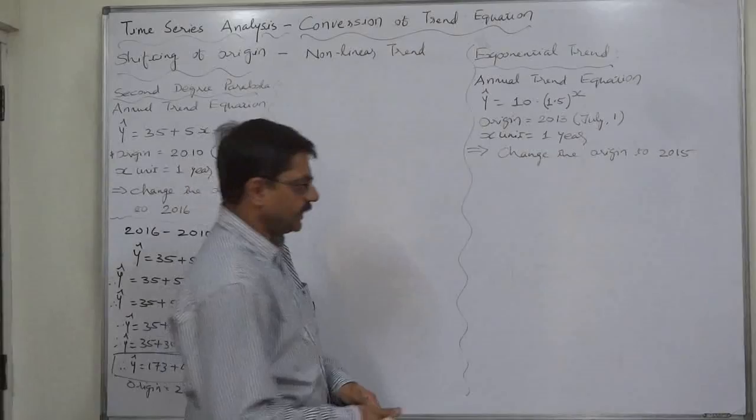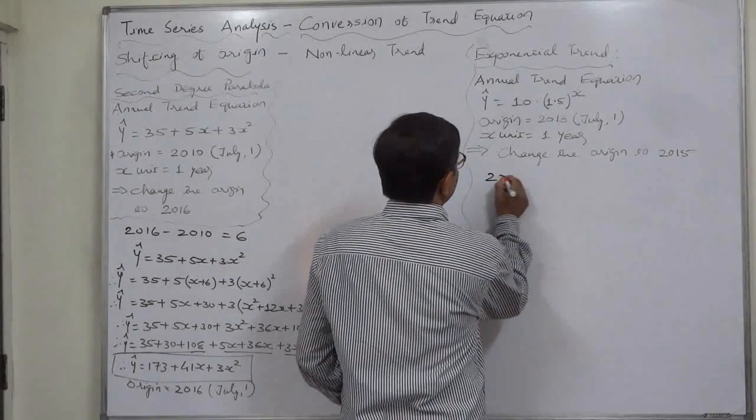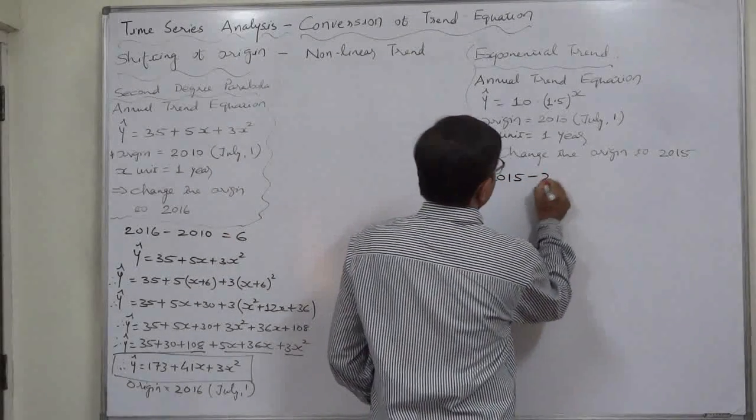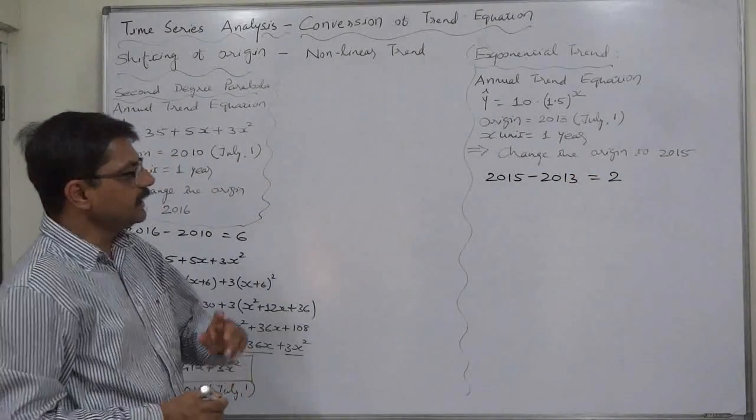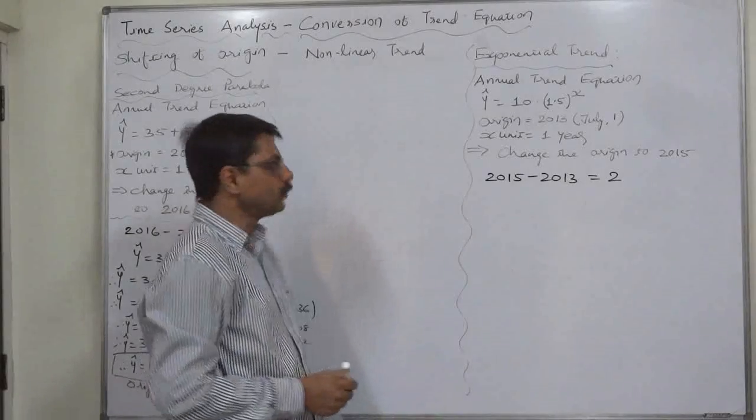We need to change the origin to 2015. 2015 minus 2013 equals to positive 2, that means we need to go forward by 2 years.